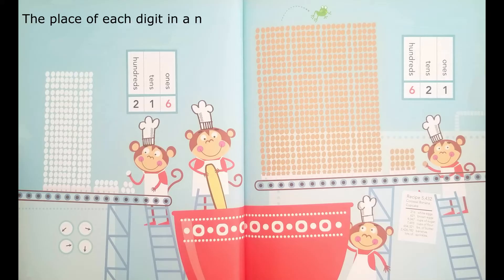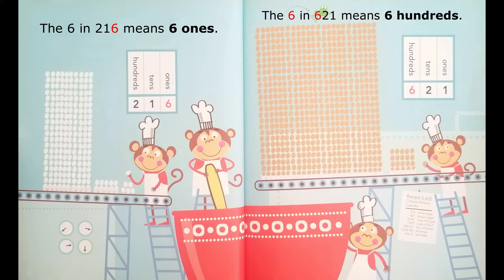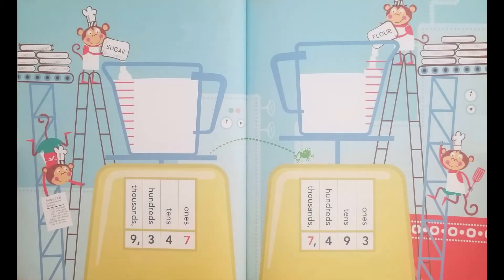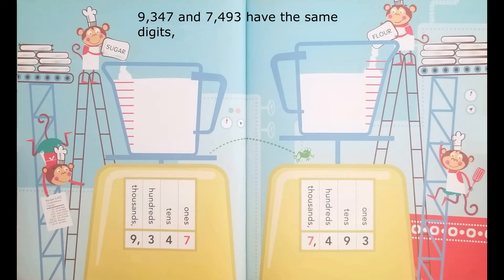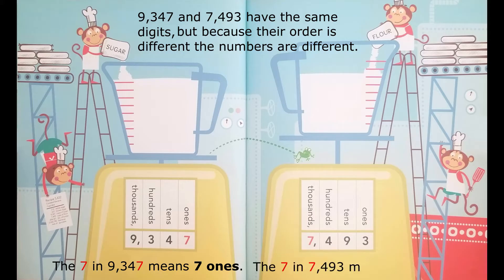The place of each digit in a number determines its value. The 6 in 216 means 6 ones. The 6 in 621 means 6 hundreds. 9,347 and 7,493 have the same digits, but because their order is different, the numbers are different. The 7 in 9,347 means 7 ones. The 7 in 7,493 means 7 thousands.